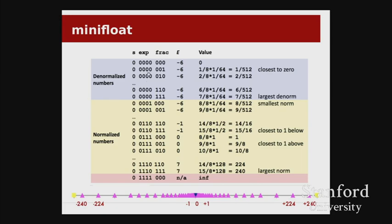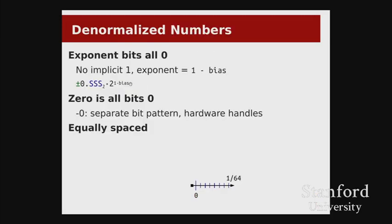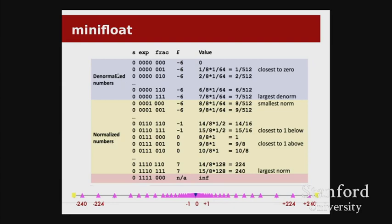When the exponent bits are all zero, the exponent in the formula becomes one minus the bias. The intention of the denormalized numbers is that they are spaced equally in increments of 1/512 to get from zero up to the smallest normalized number, which is 8/512. If we had allowed the exponent to go to negative seven, we wouldn't get that convenient spacing of 1/512 intervals up to the smallest normalized number.